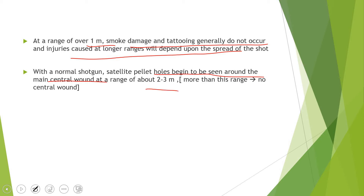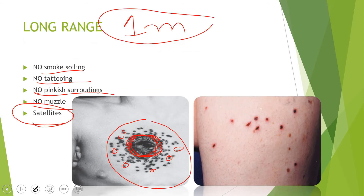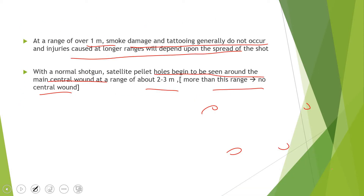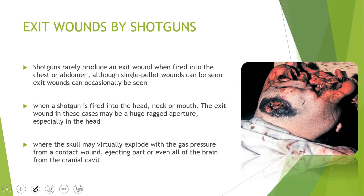Satellite pellet holes begin to be seen around the main central wound at a range of about 2 to 3 meters. Beyond this range, there will be no central wound — only satellites. In the illustration shown, there is no central wound visible, confirming it is beyond 2 to 3 meters.